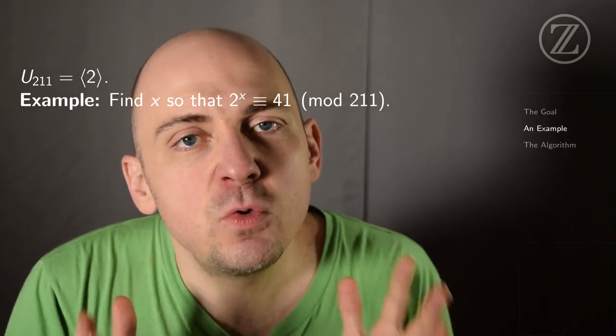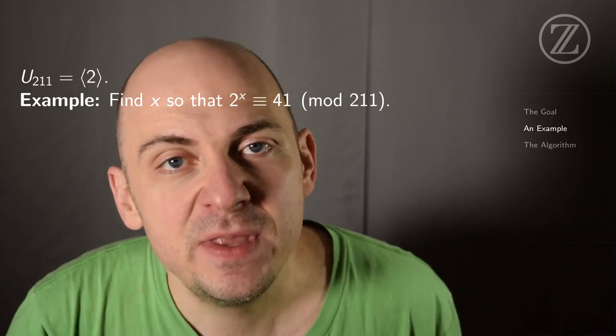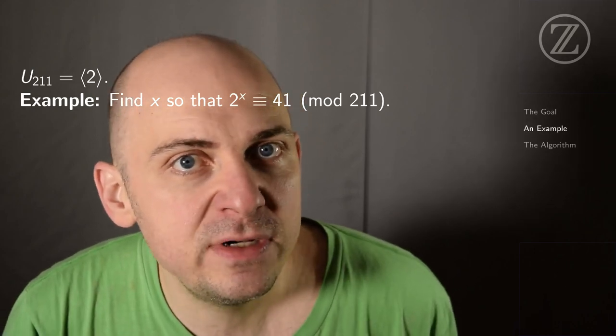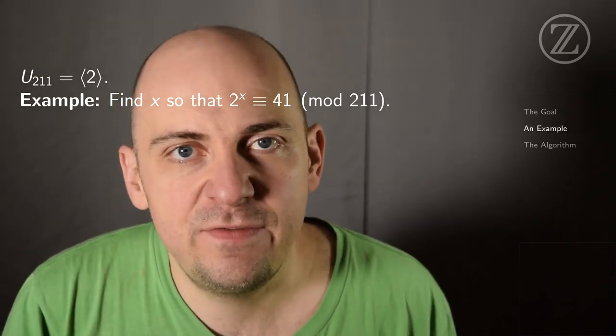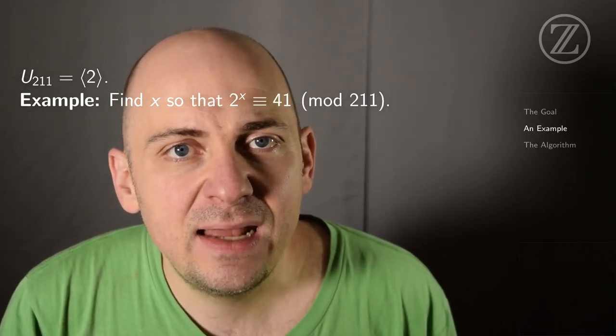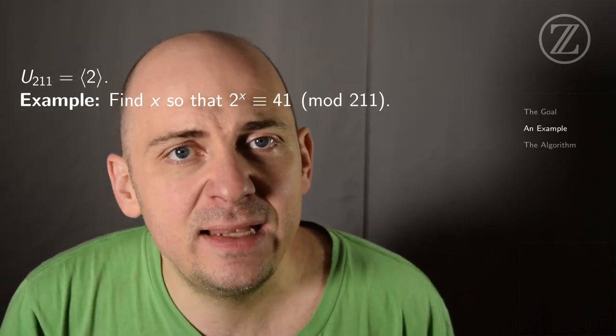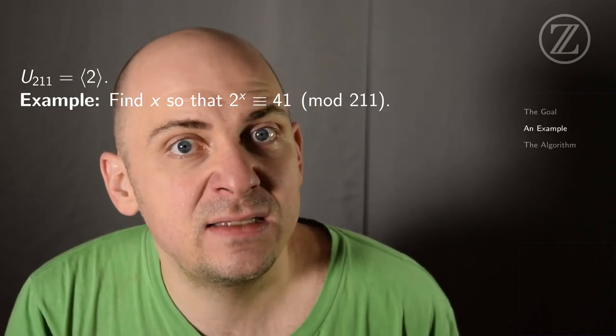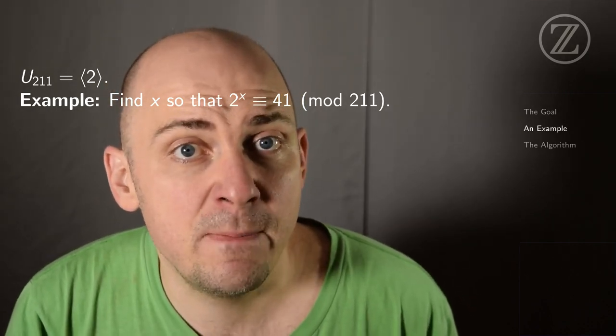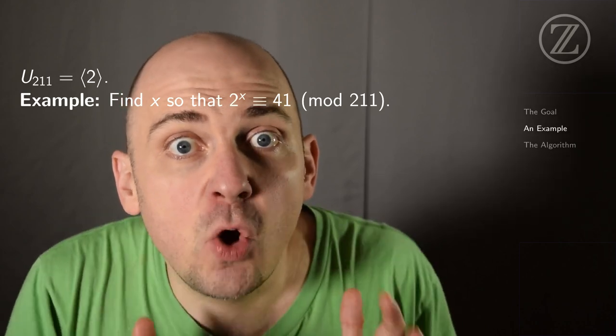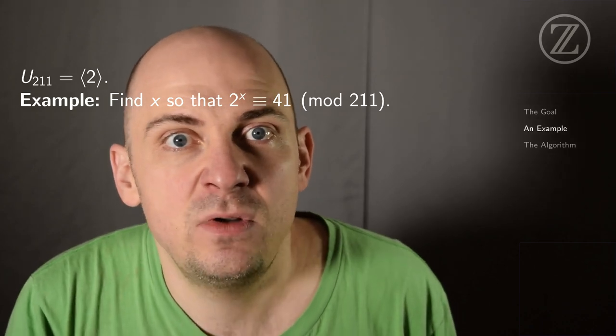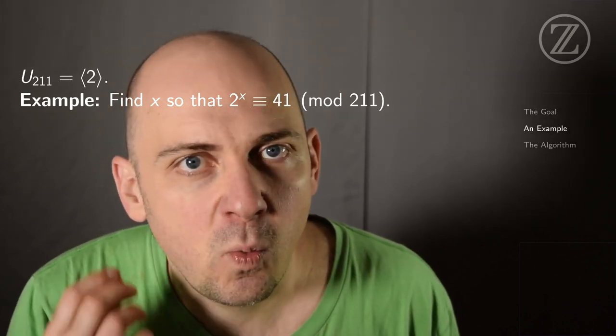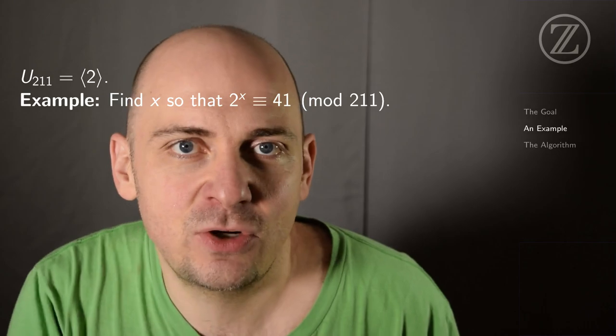So to dig into this, let's work through a specific numerical example. So I think about the prime p equals 211. And in this case, 2 happens to be a generator for the group of units. So U₂₁₁ is generated by 2. And our specific goal then will be to find an x so that 2 to the x is congruent to 41 modulo this prime. Now, I know there is such an x because 2 is a generator of the group of units. But what is that value of x? That's our goal.